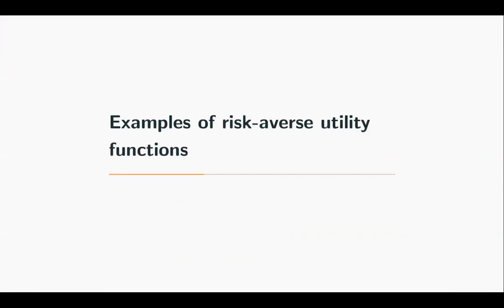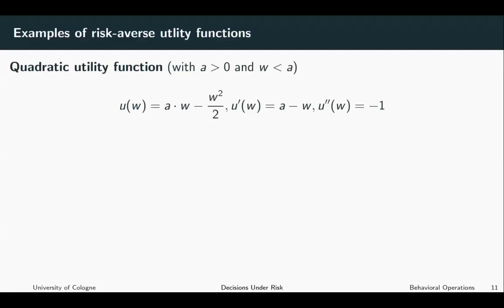Let us now look at some examples of risk averse utility functions. In this lecture we have introduced the basic concept of risk aversion. We understood that risk aversion implies decreasing marginal utility from money. A risk averse individual prefers more money to less money, but the marginal benefit of an extra dollar is decreasing. There are several utility functions that can represent such preferences.